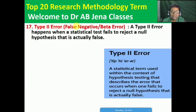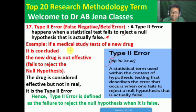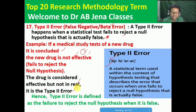Type 2 error — opposite of Type 1 — is also known as false negative or beta error. A Type 2 error happens when the statistical test fails to reject a null hypothesis that is actually false. Example: if a medical study tests a new drug and concludes that it is not effective, but the researcher considers the new drug as effective — that is, fails to reject the null hypothesis when the drug is actually not effective. Hence Type 2 error is defined as the failure to reject the null hypothesis when it is false.